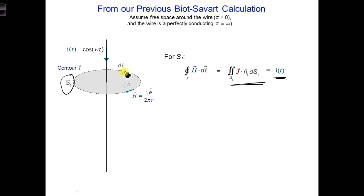So there's no indication right now that this result would change, even if we have an AC current. We would still get the current flowing on the wire. The current would just be time-changing now. It's a function of T.